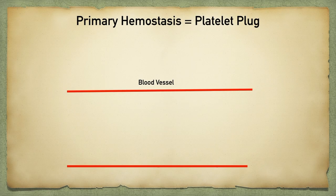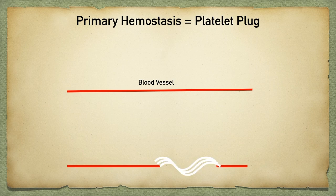As mentioned before, primary hemostasis involves forming an initial clot using platelets, and we're going to walk through this step by step. We've got a blood vessel here. Let's say that there's injury to that blood vessel, to that endothelial lining. This now exposes the subendothelial collagen that's normally hidden — now it's exposed to that intravascular space.